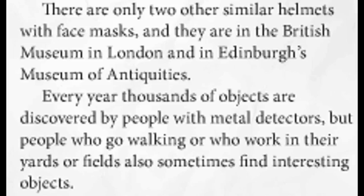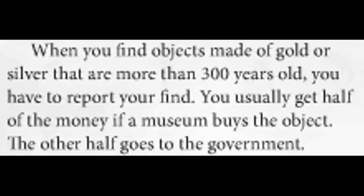Every year, thousands of objects are discovered by people with metal detectors. But people who go walking or who work in their yards or fields also sometimes find interesting objects. When you find objects made of gold or silver that are more than 300 years old, you have to report your find. You usually get half of the money if a museum buys the object. The other half goes to the government.